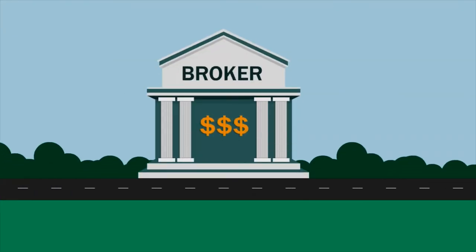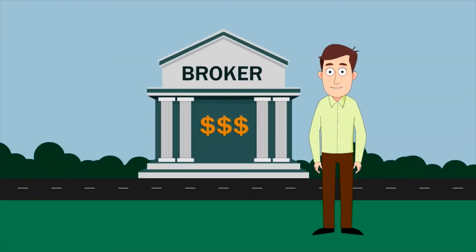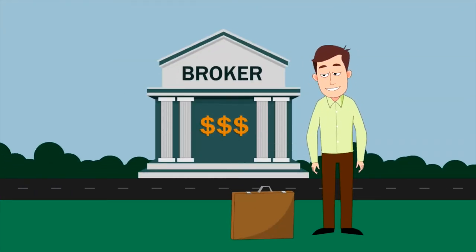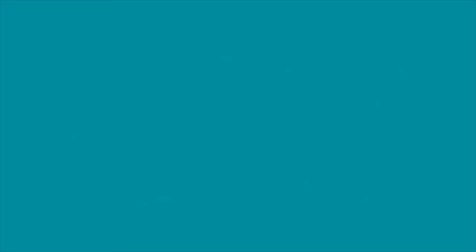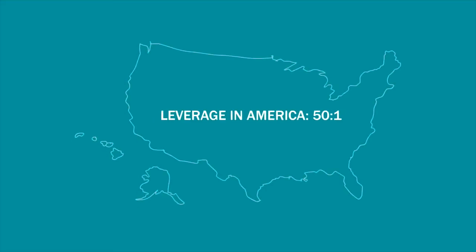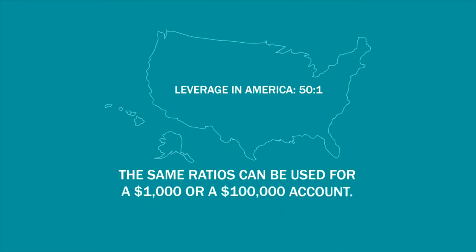This peace of mind is because in the currency market, the broker gives you leverage for your money. In America, the leverage is 50 to 1. The same ratios can be used for a $1,000 or $100,000 account.